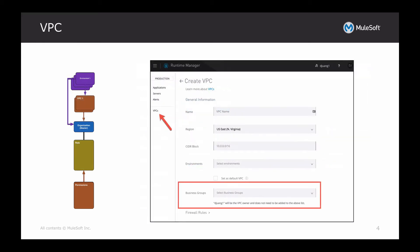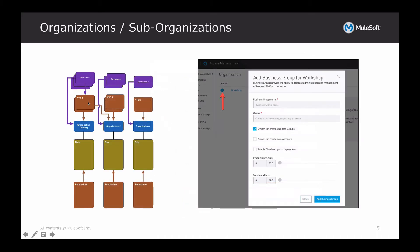Environments are tied to an organization that you define. Additionally, if your account is entitled for VPCs, you can also define VPCs specific for that business group. And you can see here when you create a VPC, you can select a business group to assign to that VPC. You can also assign environments or a single environment to a VPC. Each sub-organization can have its own set of environments as well as its own set of VPCs.